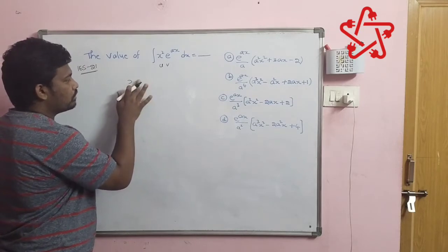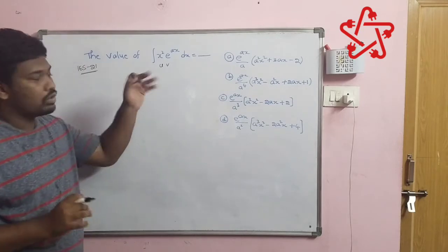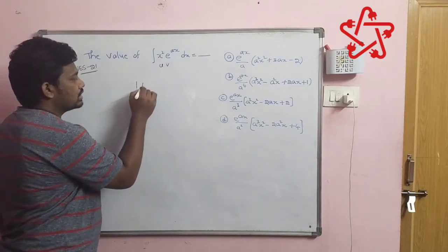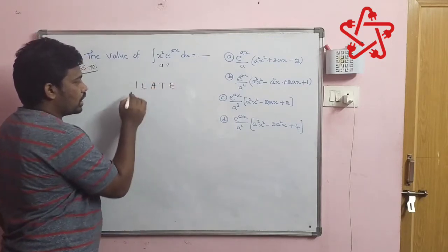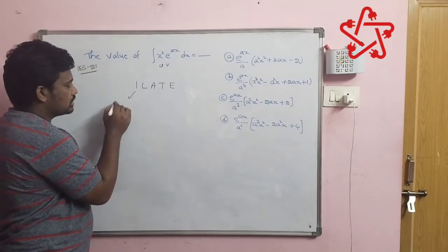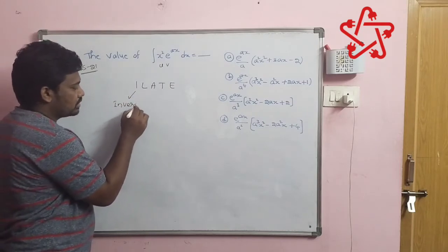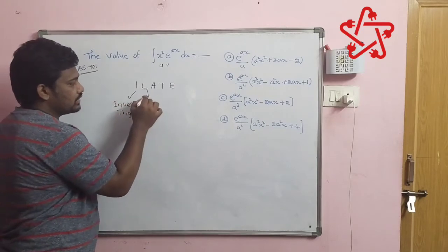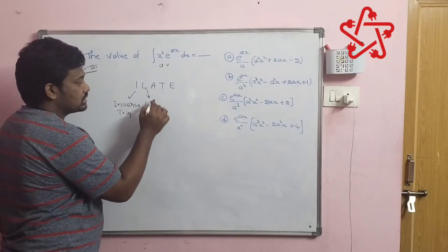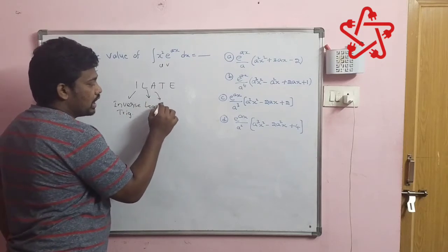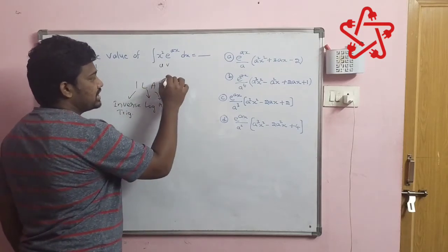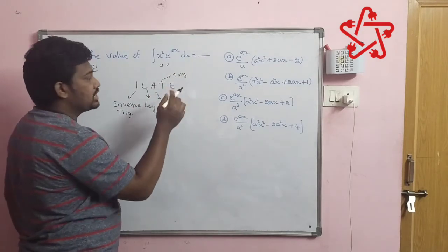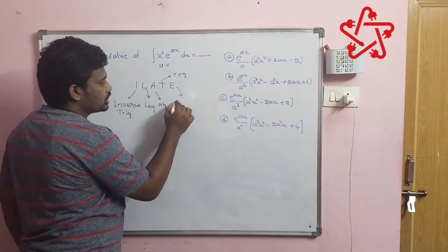For Bernoulli's we should write u and v first. For finding what is u and what is v we need ILATE. I stands for inverse trigonometric functions, L stands for logarithmic functions, A stands for algebraic equations, T stands for trigonometric terms, and E stands for exponential terms.